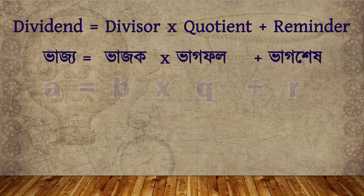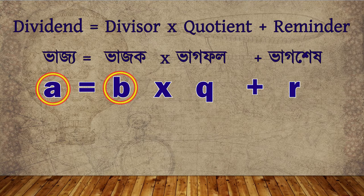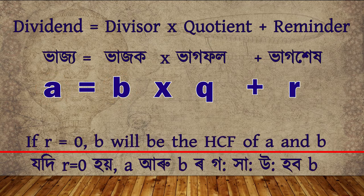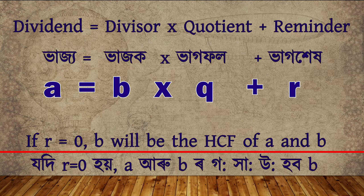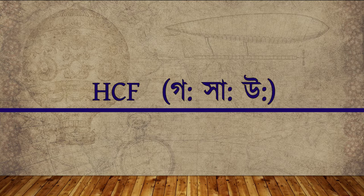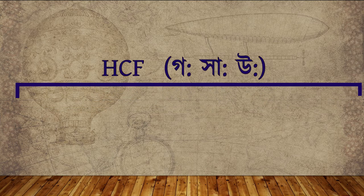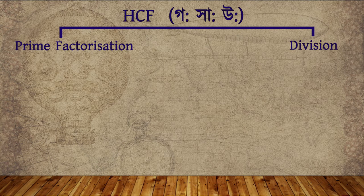Using Euclid's Division Lemma, we can determine the HCF of two numbers. The condition is that the remainder must be equal to 0. The divisor will be the HCF of the given numbers if the remainder is 0. If you are asked to find the HCF of two numbers, then how will you find it? We calculate HCF by using two methods: by prime factorization and by division.